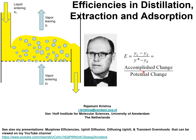For a binary mixture, since the mole fractions add to unity, the Murphy component efficiency of component 1 must equal that of component 2. This equality is no longer required for mixtures containing three or more components. For a ternary mixture, for example, the three component efficiencies may differ from one another.